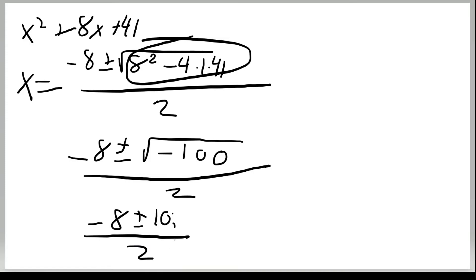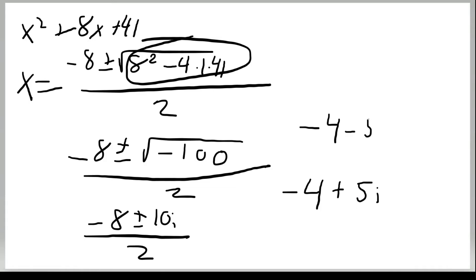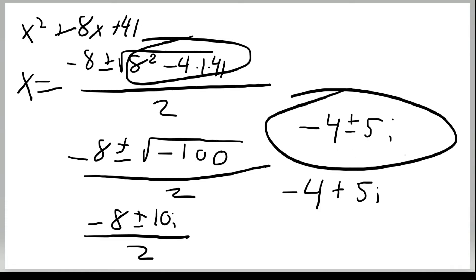Take the square root of 100, which is 10, and include i. So we have negative 8 plus or minus 10i, over 2. Since 10 has i in it, we can't combine terms directly, so we divide each by 2: the result is negative 4 plus or minus 5i. That is the imaginary solution.